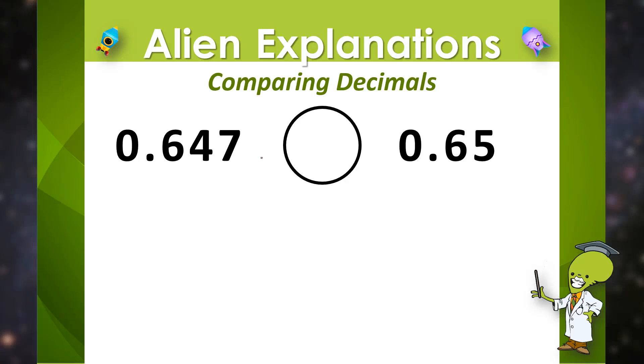Let's go over comparing decimals. In this example we are comparing 647 thousandths and 65 hundredths.